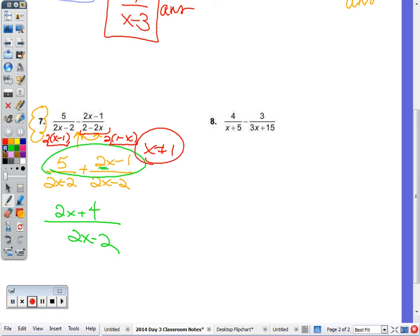The answer is not in simplest form, so when you factor out a GCF, this is 2 times x minus 1. This is 2 times x plus 2. Then you can cancel the 2s, and the answer would be x plus 2 over x minus 1.